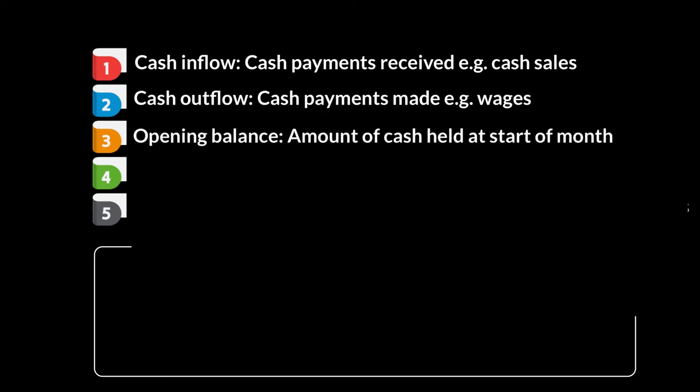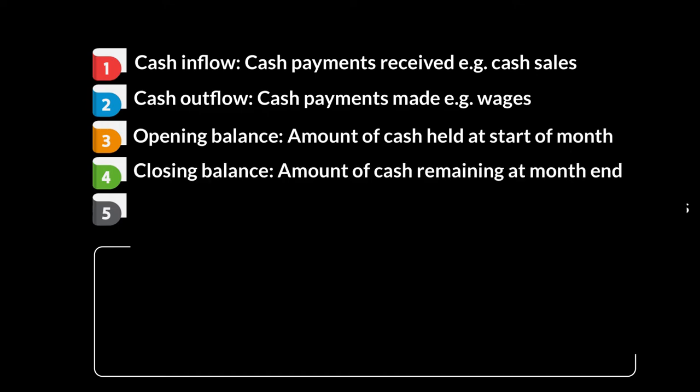Then there's your opening balance — this is the amount of cash that you had at the start of the month. And then there's also closing balance, the amount of cash you have remaining at the end of each month. The closing balance of one month becomes the opening balance of the next month.